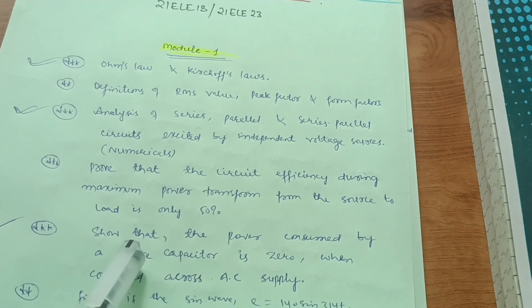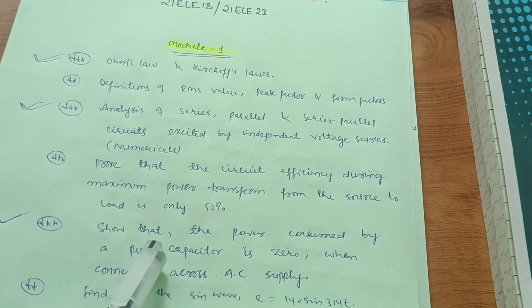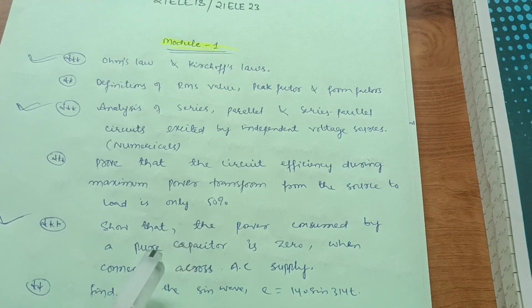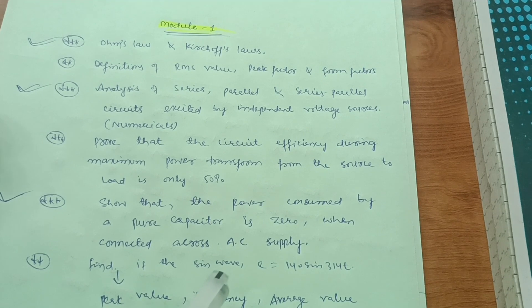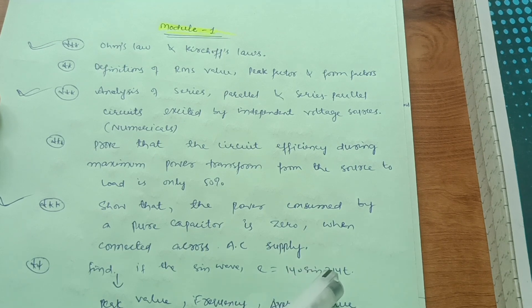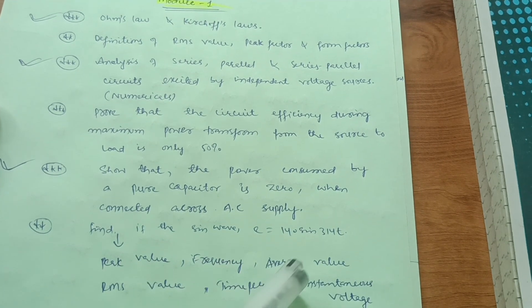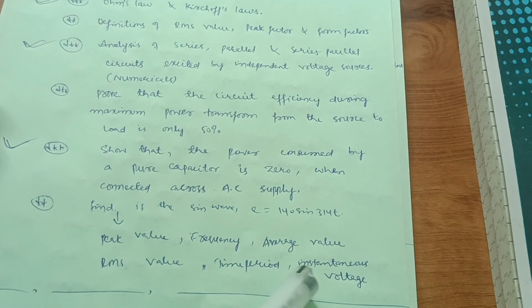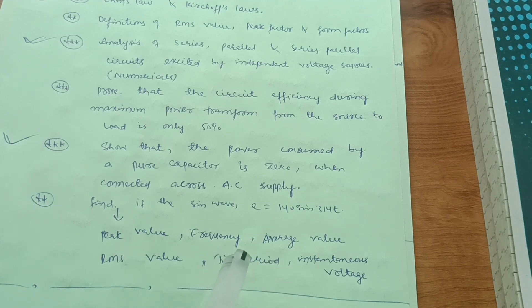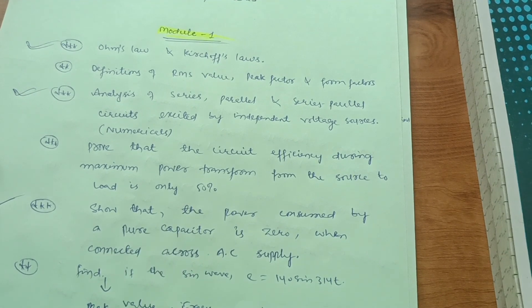Also show that the power consumed by a pure capacitor is zero when connected across an AC supply — this is a super important question, frequently asked in examinations since the 2018 scheme. Some or-part questions are simpler: if the sine wave is e = 140 sin(314t), find the peak value, frequency, average value, RMS value, time period, and instantaneous voltage. Just memorize the formulas so you can write the given data and calculate values. This much content is enough to cover Module 1.